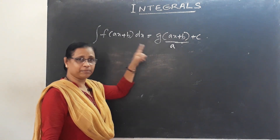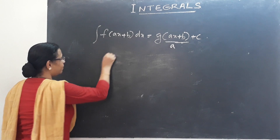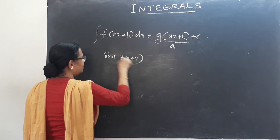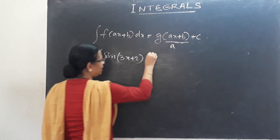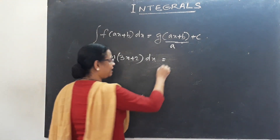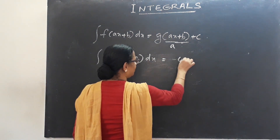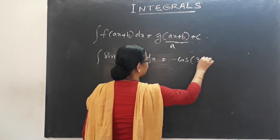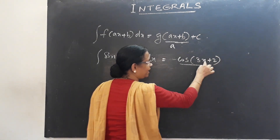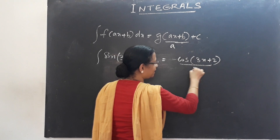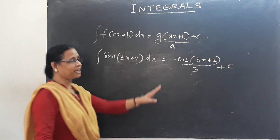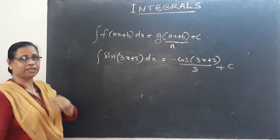This is the second method. Taking the example of sin(3x+2): if we integrate sin, we get minus cos(3x+2), then divide by the coefficient of x, which is 3, giving minus cos(3x+2)/3 plus c.